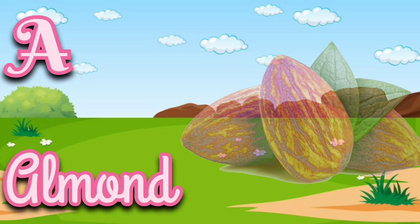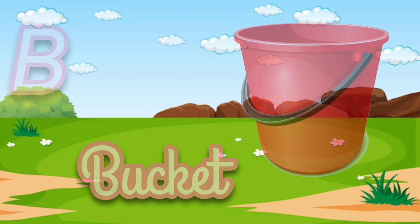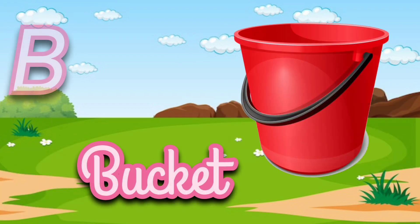A for almond. Almond means badam. B for bucket. Bucket means balti.